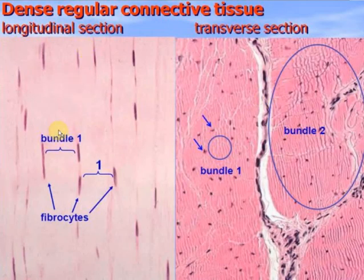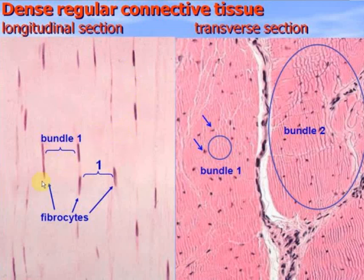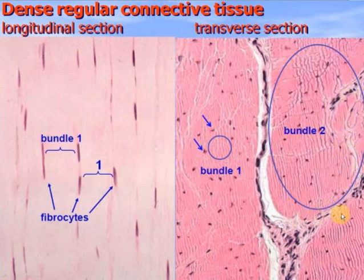This is a dense regular connective tissue in longitudinal section under a light microscope. You see the bundles separated by fibrocytes — these rod-shaped nuclei. This is bundle one, separated by fibrocytes, and this is bundle two, surrounded by loose connective tissue.